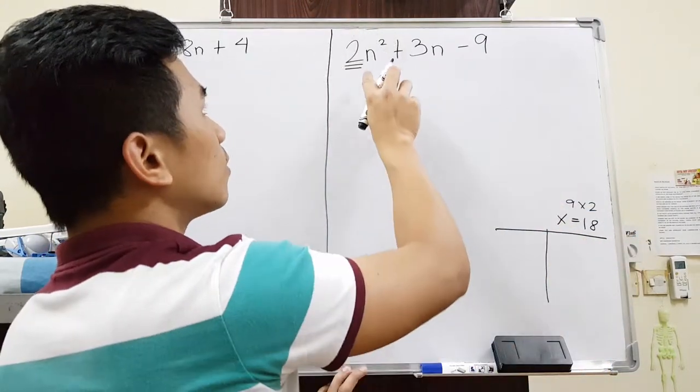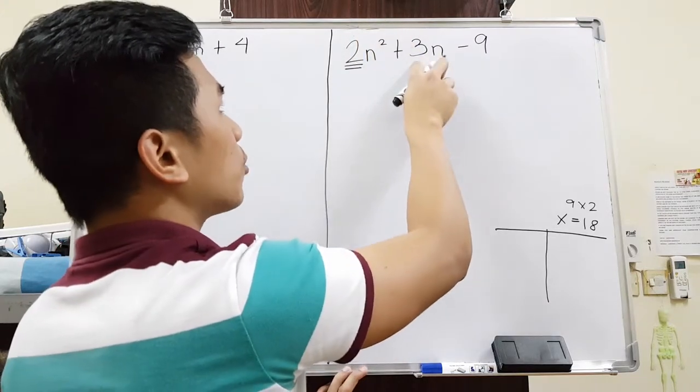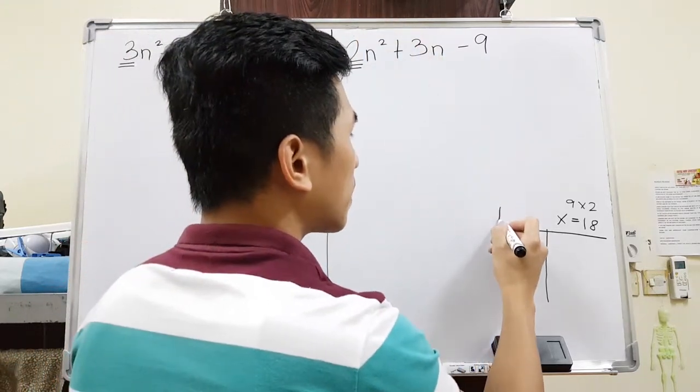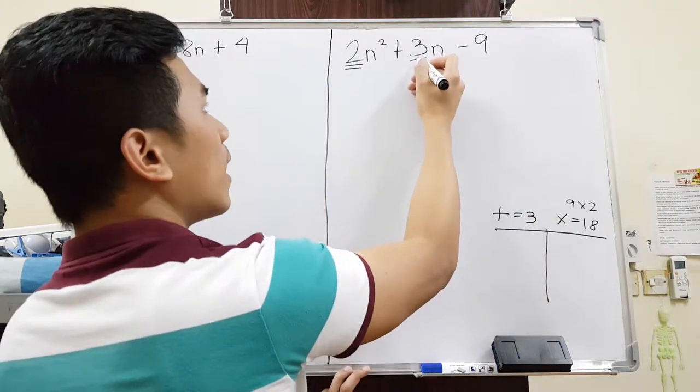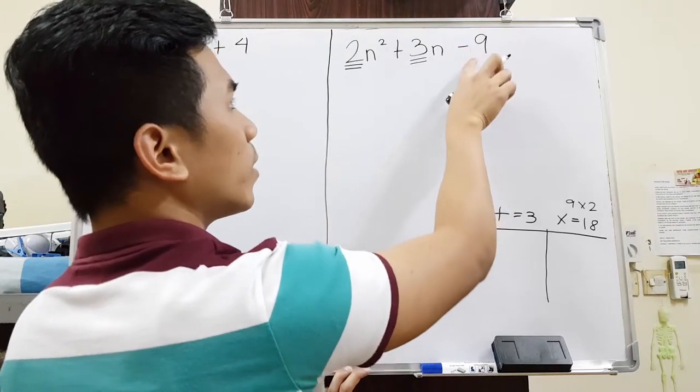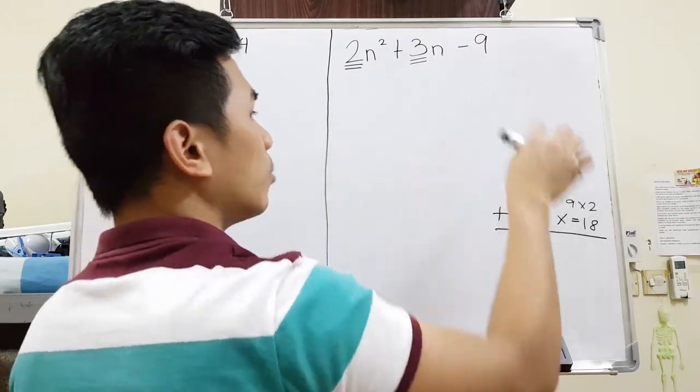And then, two numbers that add up to 3. So what numbers that add up to 3? Just like before, it's the same. It has to add up to 3. But instead of multiplying just to negative 9, it will multiply to 2 times 9, which is 18.